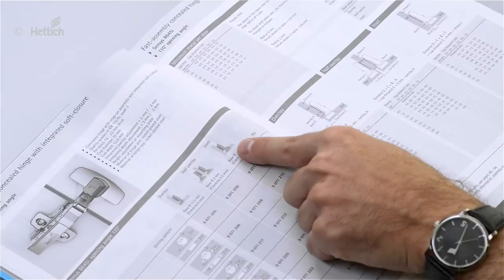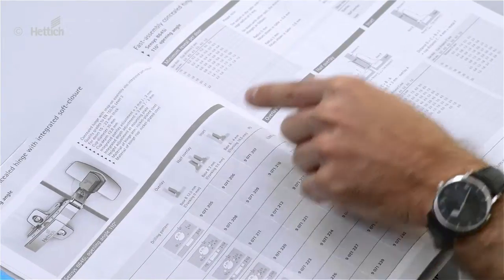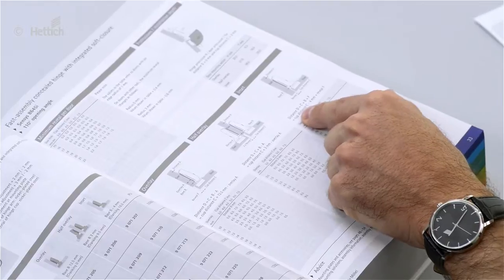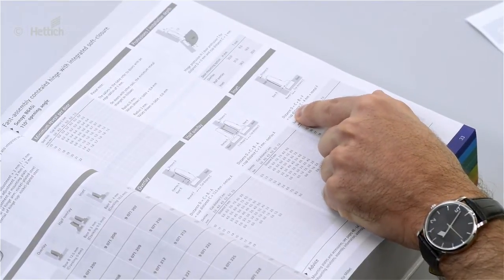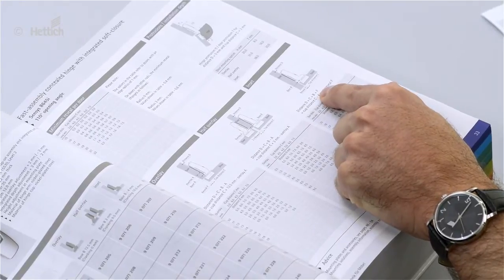We see here the inset application and on the opposite side the formula to calculate the mounting plate distance D, which is C plus B plus F.